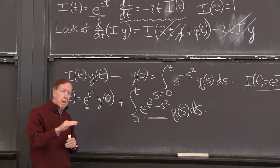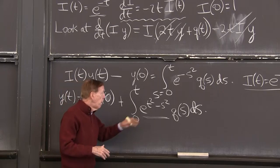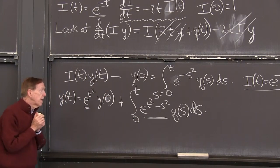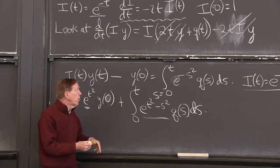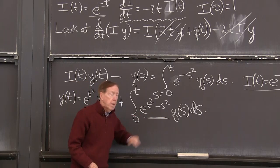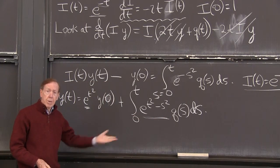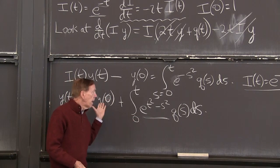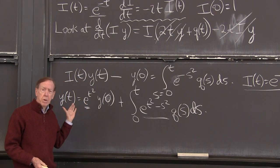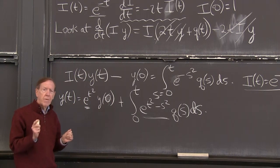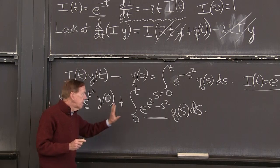Because the input went in at time s. And it had the shorter time, t minus s, to grow. So that's the formula for the answer. If you give me any particular q of s, I just do the integral. And I find the solution to the differential equation. So that integrating factor has made things work.